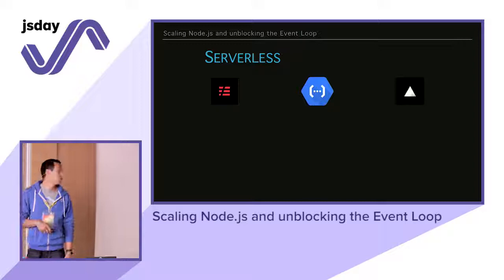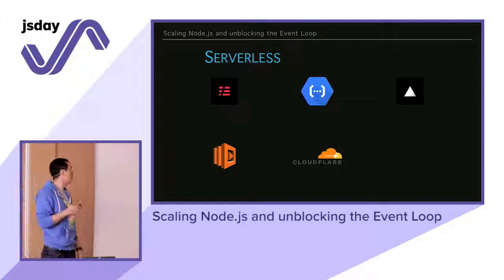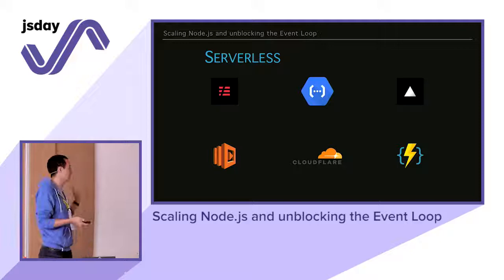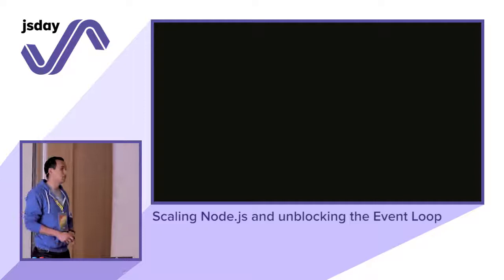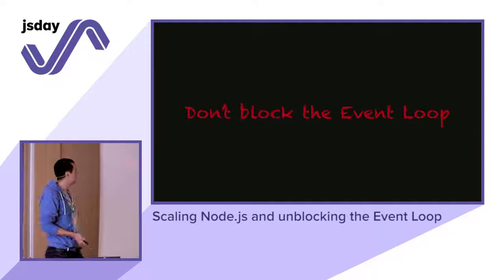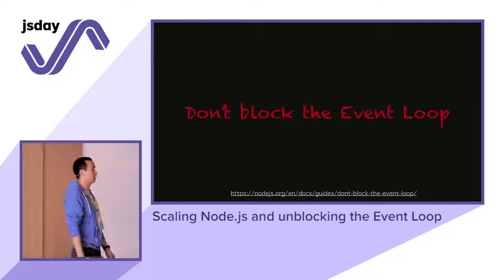We have the Serverless library, Google Cloud Functions, Zeit Now, Lambda, Cloudflare Workers, and Azure — I'm sure there's more. Now let's get to the Node.js part. From the inside, how do you scale it? It's pretty simple: you want to not block the event loop at all. There's even a guide from the Node.js Foundation — just don't do it.